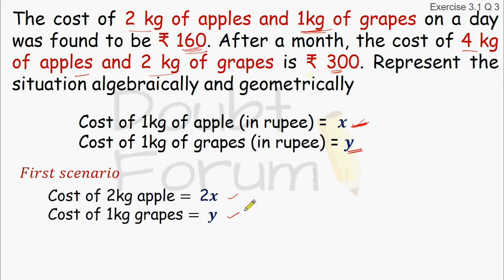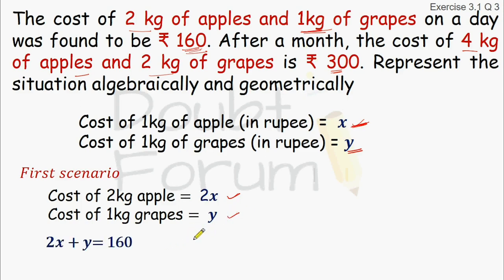As per the question, the price of 2 kg of apples is 2x, and 1 kg of grapes is y, which equals Rs. 160. So 2x plus y equals 160. This is our equation number 1.